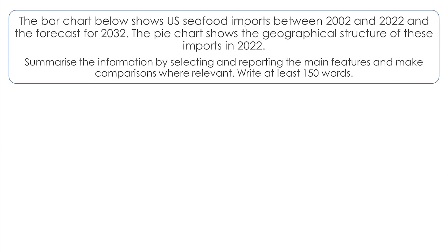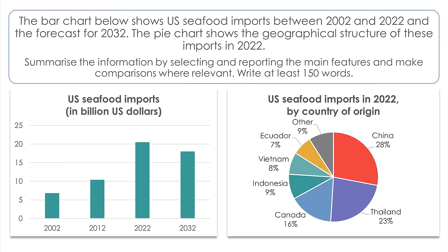Here is our task. The bar chart below shows US seafood imports between 2002 and 2022 and the forecast for 2032. The pie chart shows the geographical structure of these imports in 2022. Summarize the information by selecting and reporting the main features and make comparisons where relevant. Write at least 150 words. The bar chart shows seafood imports in three time periods in the past and a forecast. The pie chart shows what proportion of seafood comes from each country.